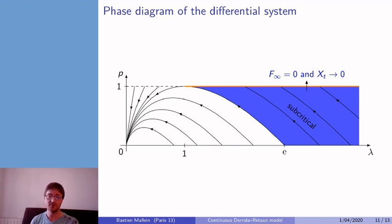in which (pₜ, λₜ) will be absorbed by the line p equals 1, λ larger than 1. And this corresponds to the case where F∞ is equal to zero and Xₜ goes to zero as t goes to infinity.